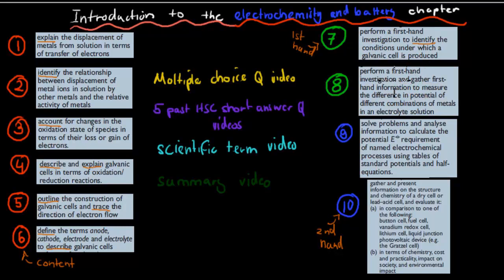We have measure, to measure the difference in potential for number eight. Solve problems and analyze information to calculate the potential requirement of named electron flow. So calculate for number nine. And this one we have evaluate here. And we have compare, so comparisons. So evaluate and compare.